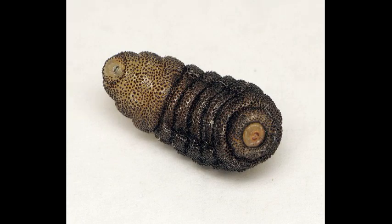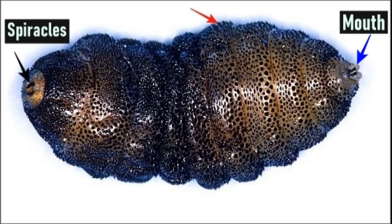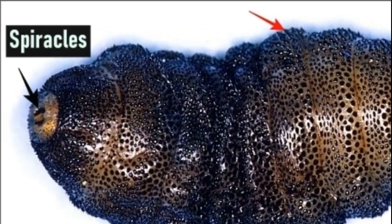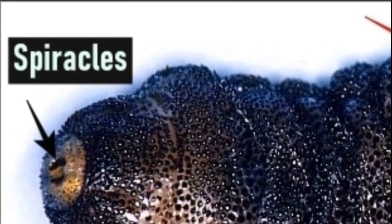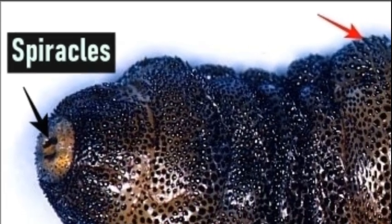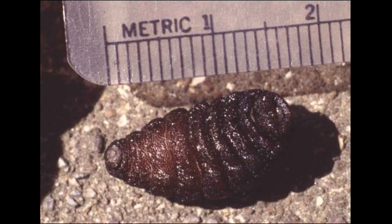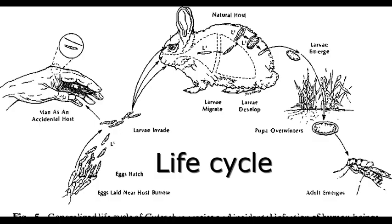This is a larva or maggot form of this fly. These larvae are also known as bot fly larvae. They are found under the skin, usually around the neck and leg, or occasionally around the abdomen. We can notice these larvae have very fine spines all over the body, indicated by a red arrow, and a characteristic kidney-shaped posterior spiracle indicated by a black arrow. Fully grown larvae can be up to 1-2 cm.